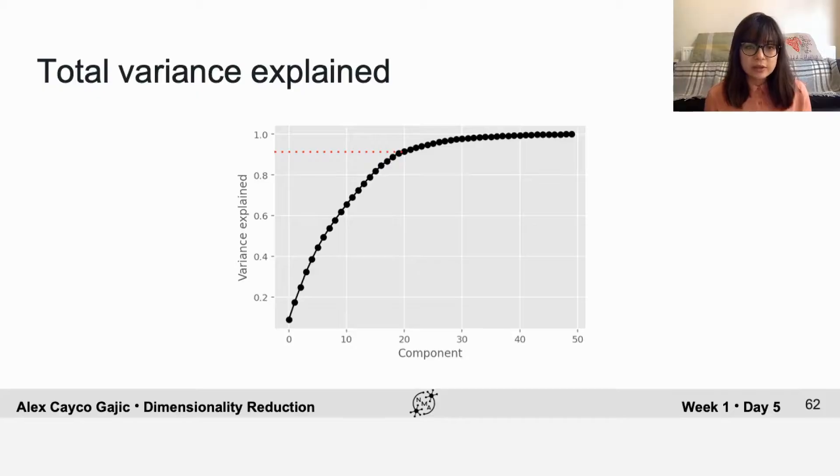The way to determine the intrinsic dimensionality using this method is to look for some threshold, let's say 90% of the variance, and see how many components are necessary to explain that amount of the variance in the data. So in this case, that again gives 20 components.